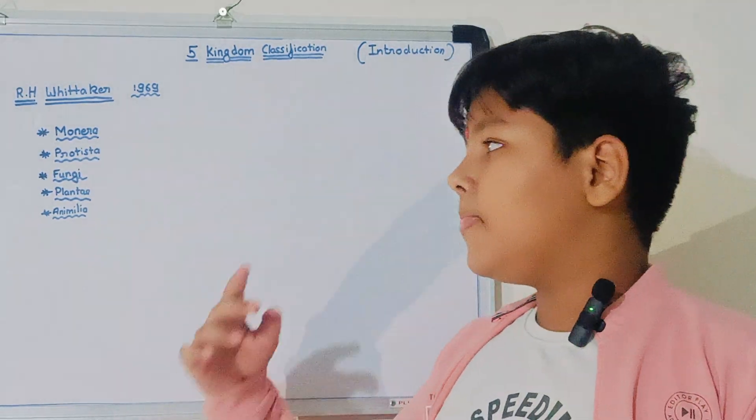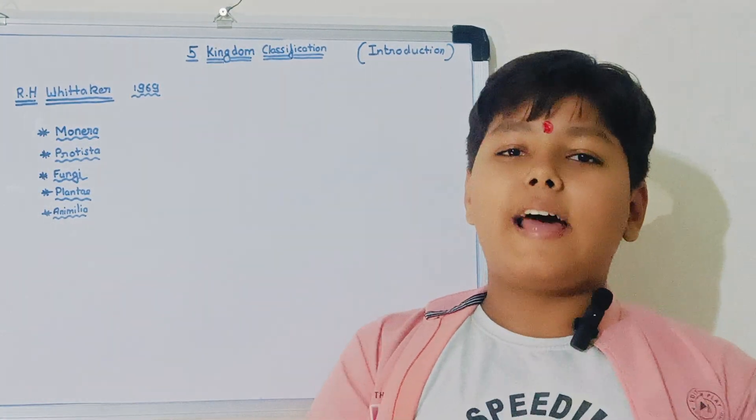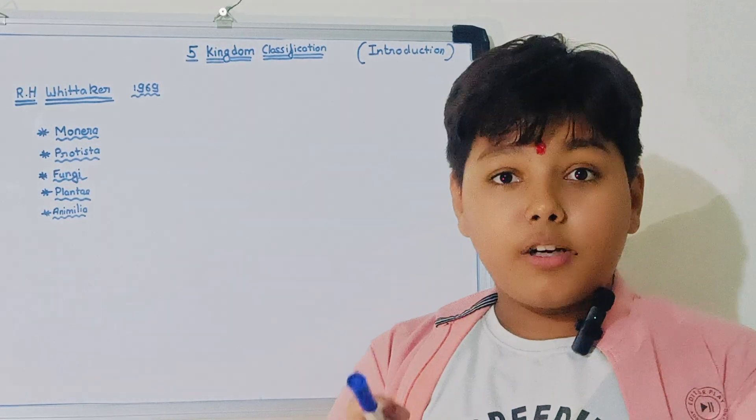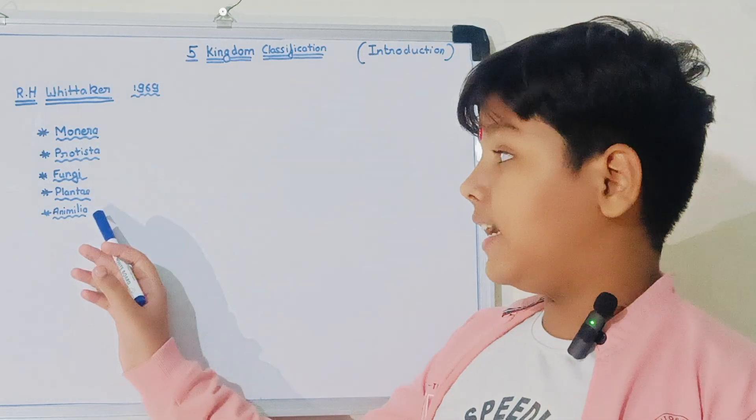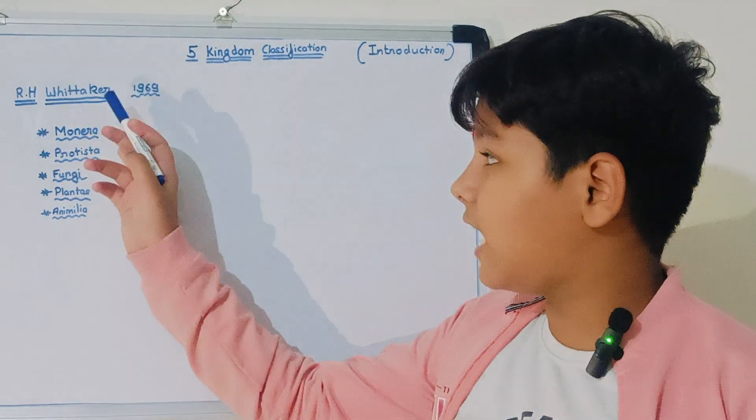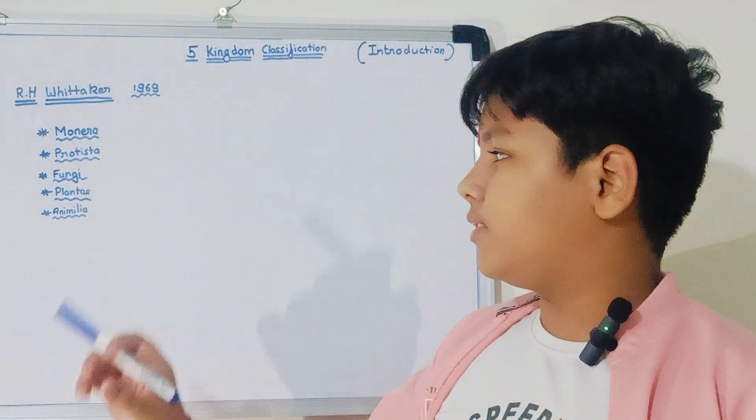Next is Animalia. Obviously, all humans, all animals come under Animalia, but not the microorganisms. They are in Monera. All the microorganisms and such things are in Monera. And amoeba, etc., are in Protista.